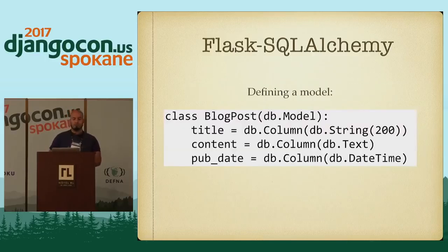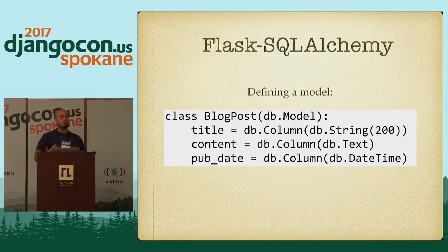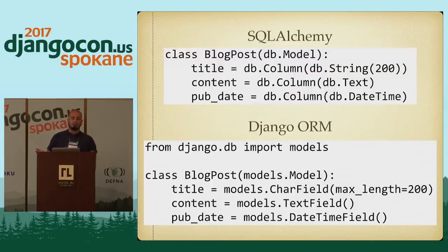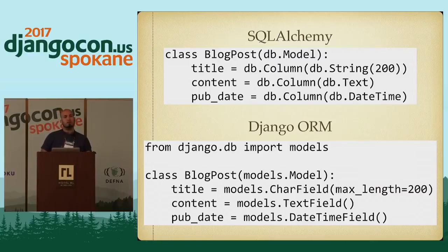The important thing here is that you import the SQLAlchemy class and create a variable called db by wrapping your application with SQLAlchemy. Now that you have this db object, you can do some very familiar things with it. Here I'm defining a blog post data model that looks very similar to what you would do with the Django ORM. I'll put the previous example on the same slide so you can compare and contrast — they're not identical, but they're very similar.